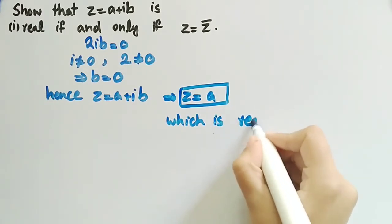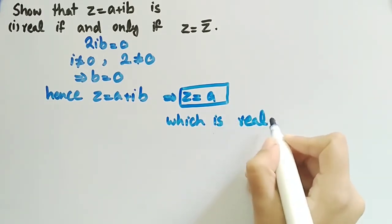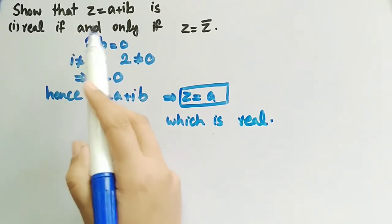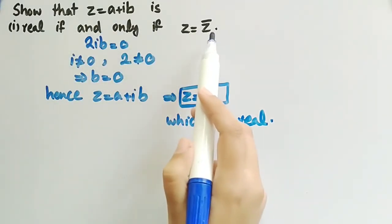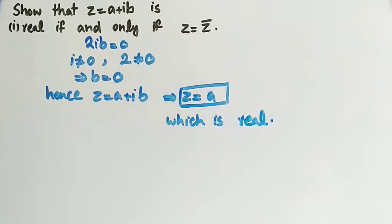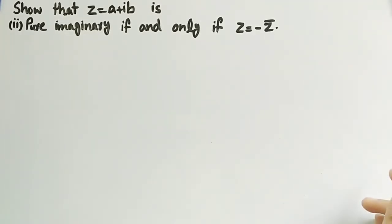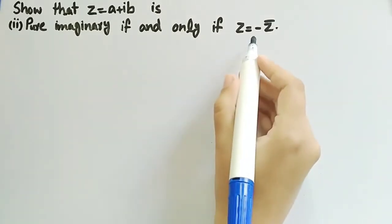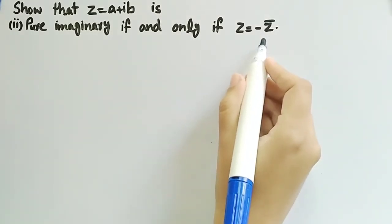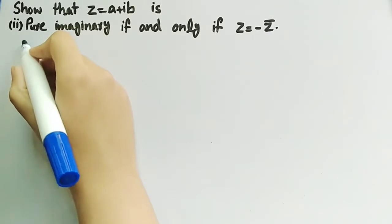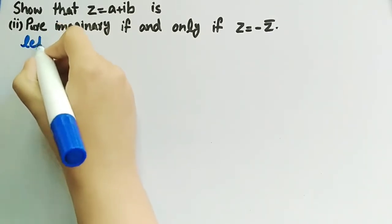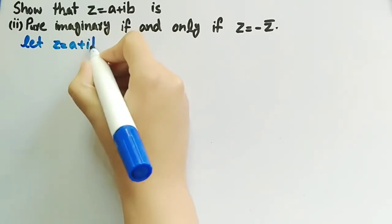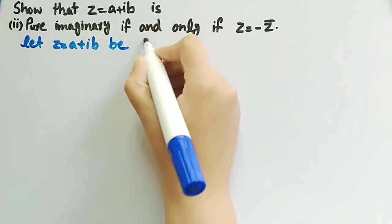So the converse is also proved. We can say that a complex number Z is real if and only if Z is equal to Z conjugate. Now we will show that Z is pure imaginary if and only if Z equals minus Z conjugate. To prove it, let Z equal to A plus iB be pure imaginary.